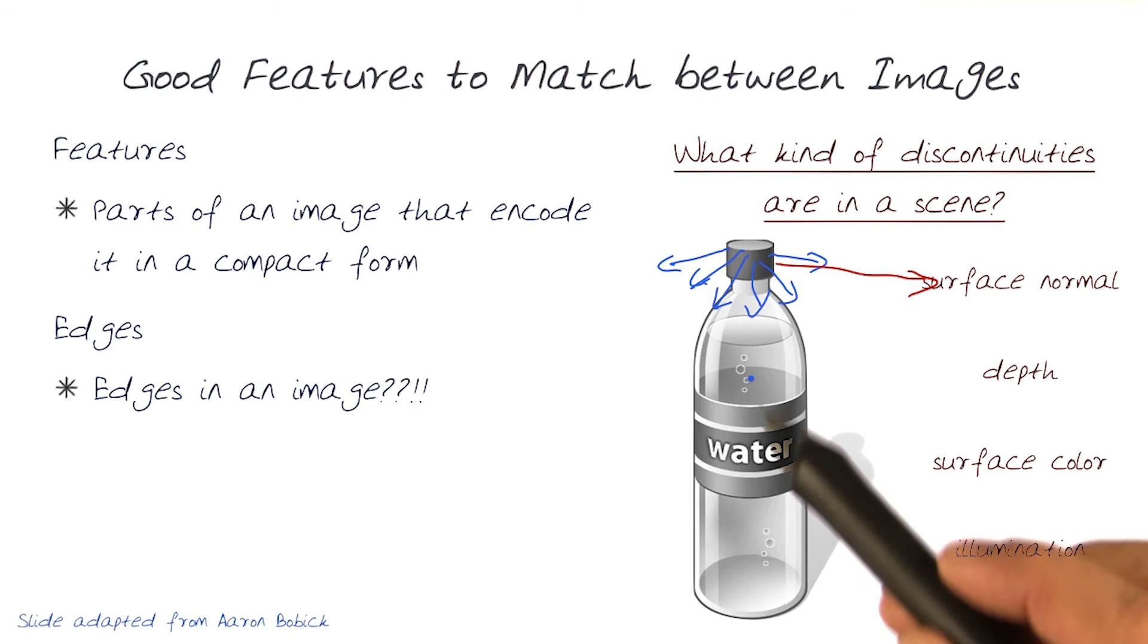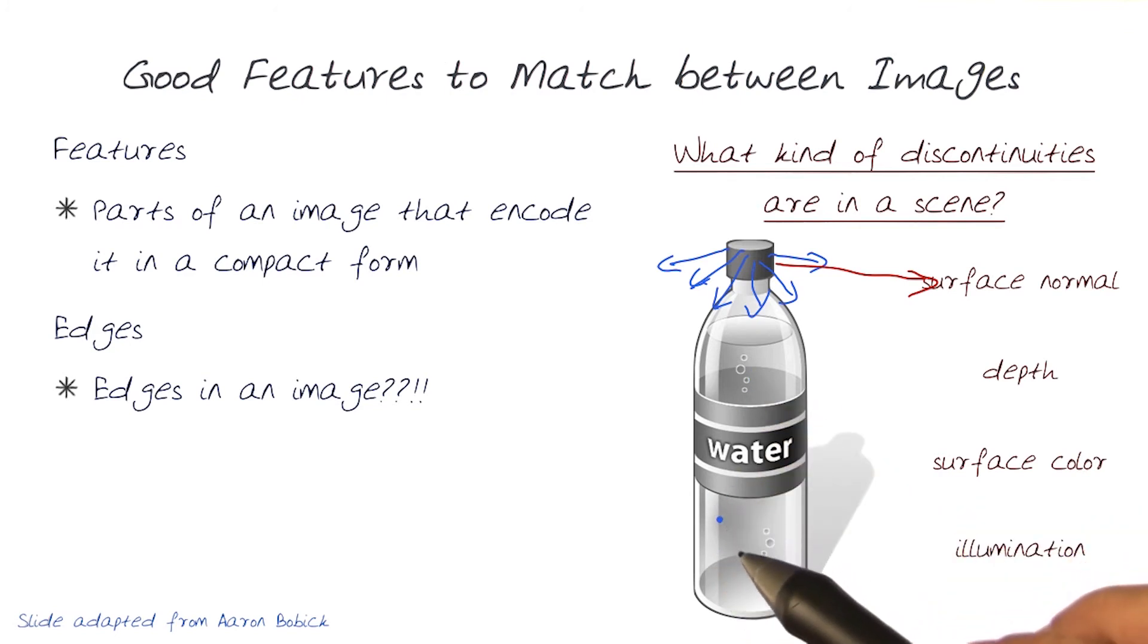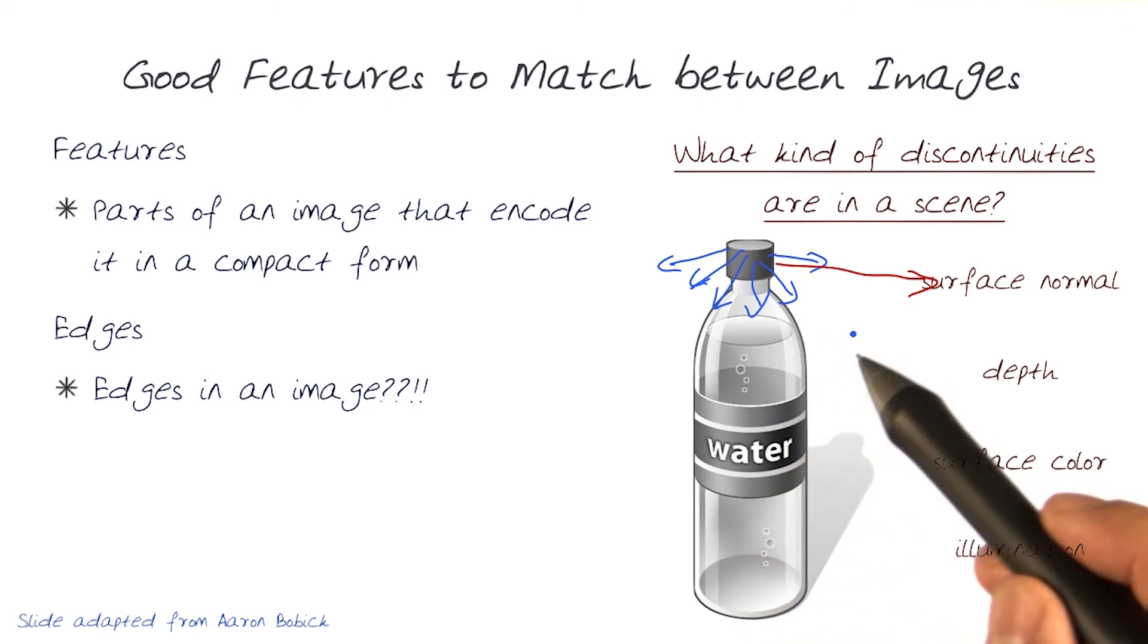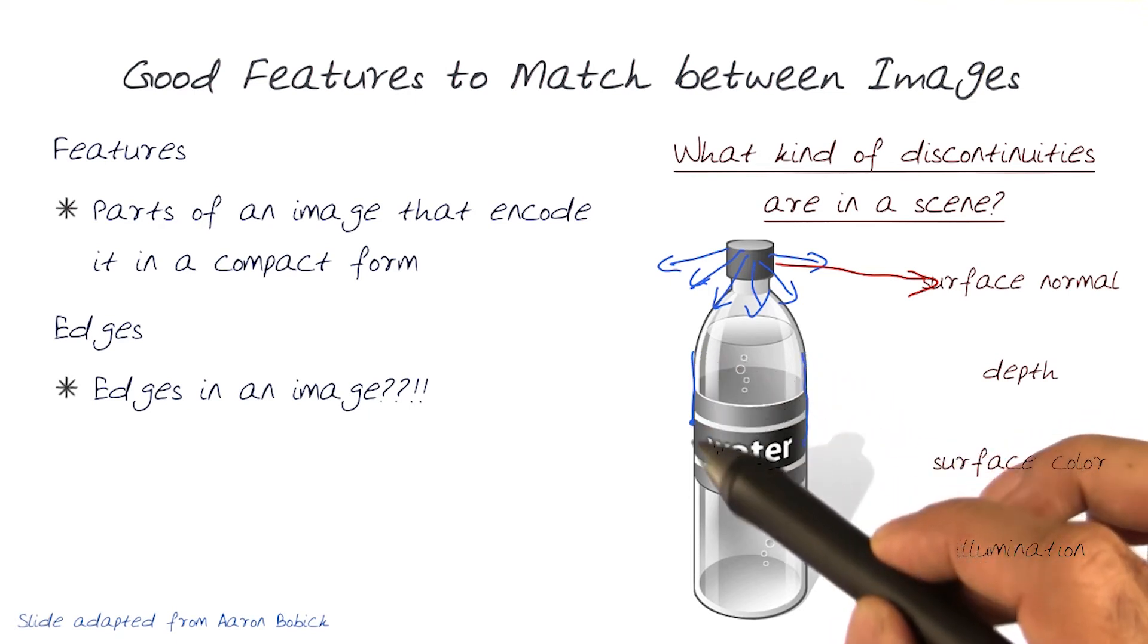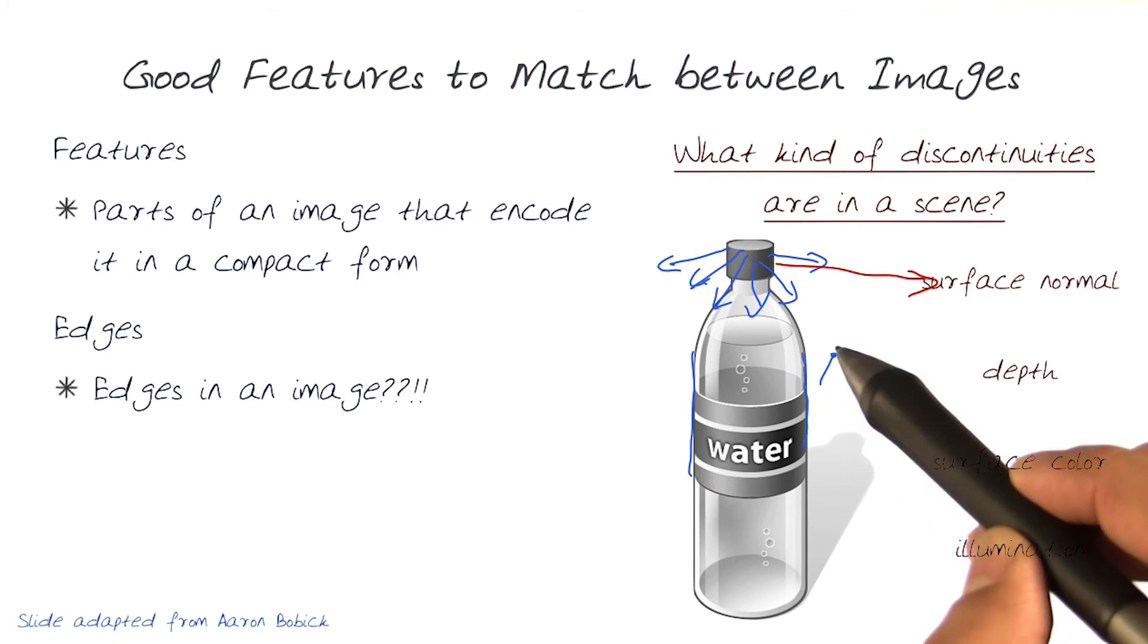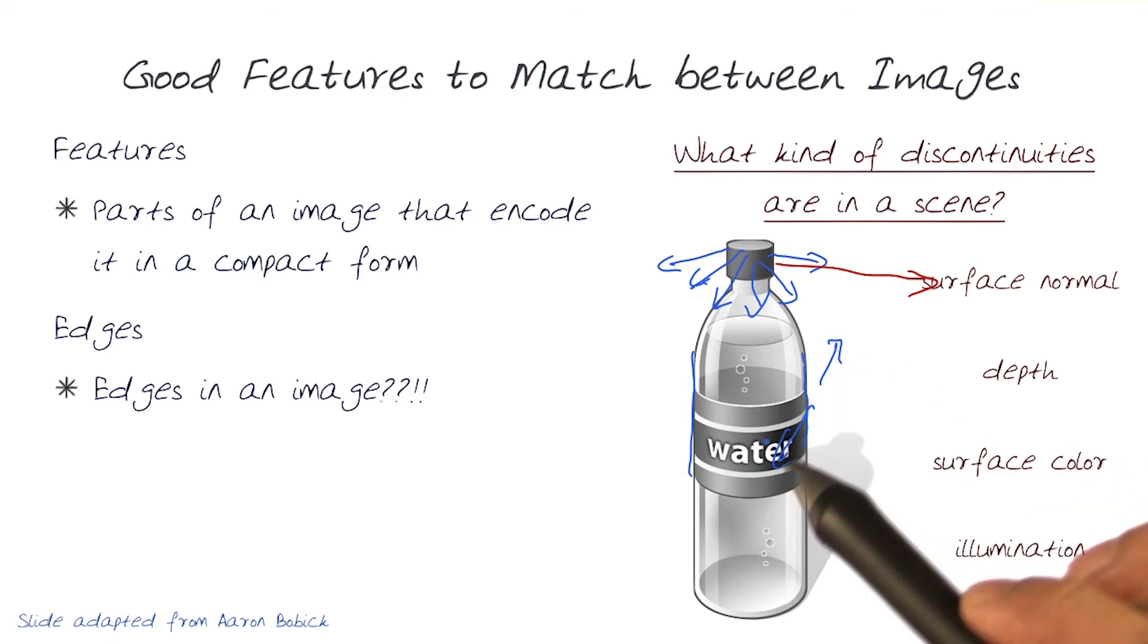Let's look at depth discontinuities. In this case, we know there's an object that might be in front of something. By just being able to look at the sides here, you know that anything behind that would be at a different depth. This would be in front of everything behind that. So that would be a depth discontinuity.